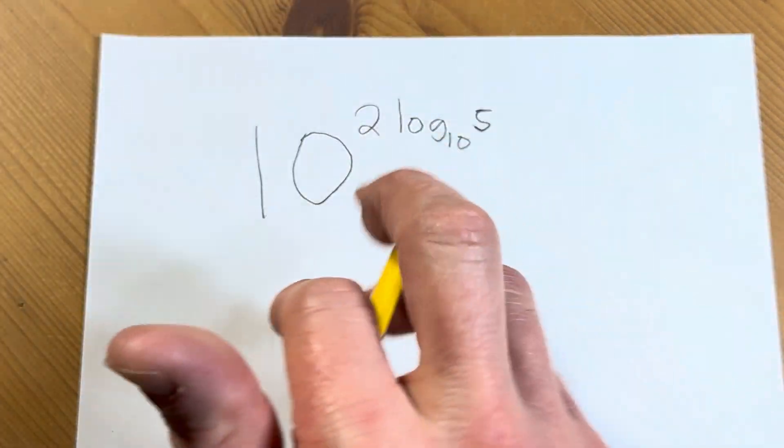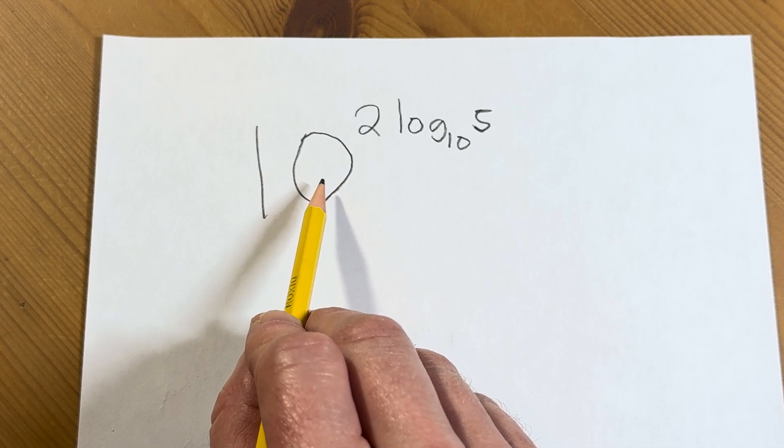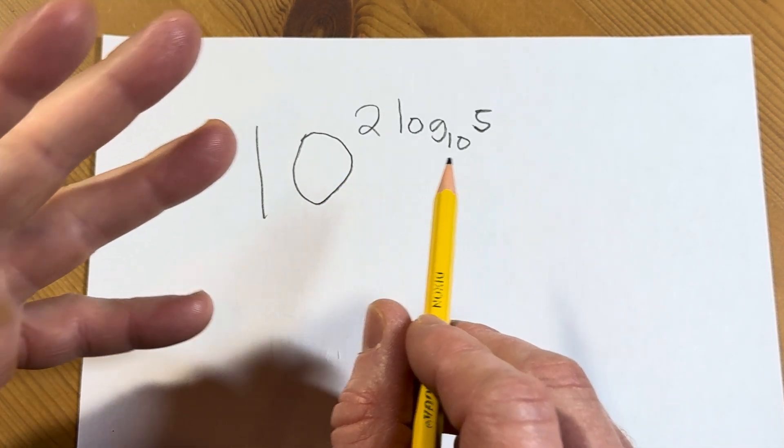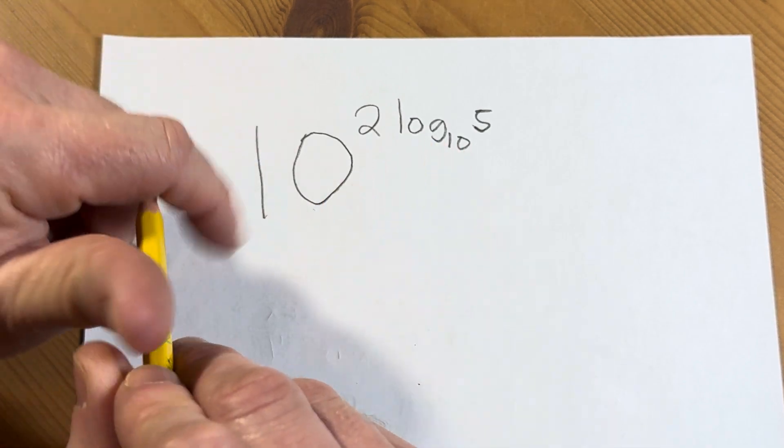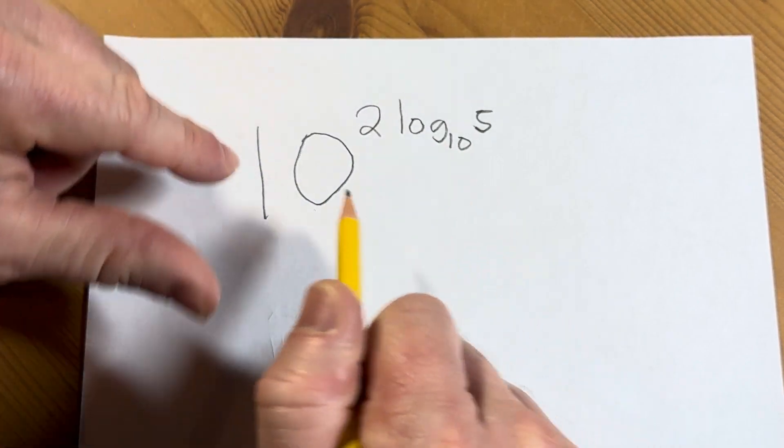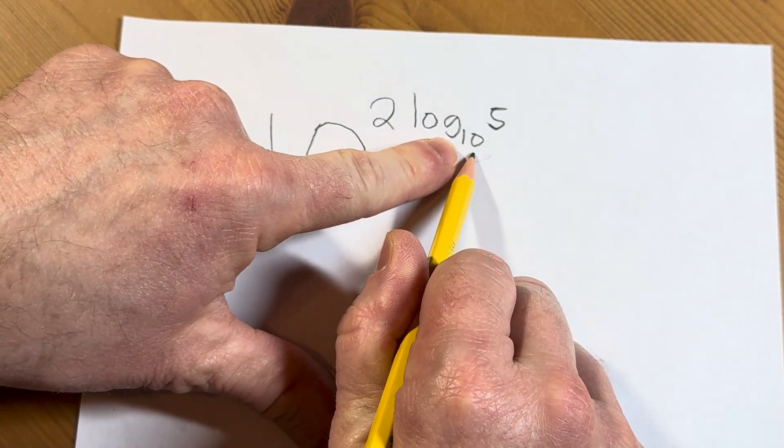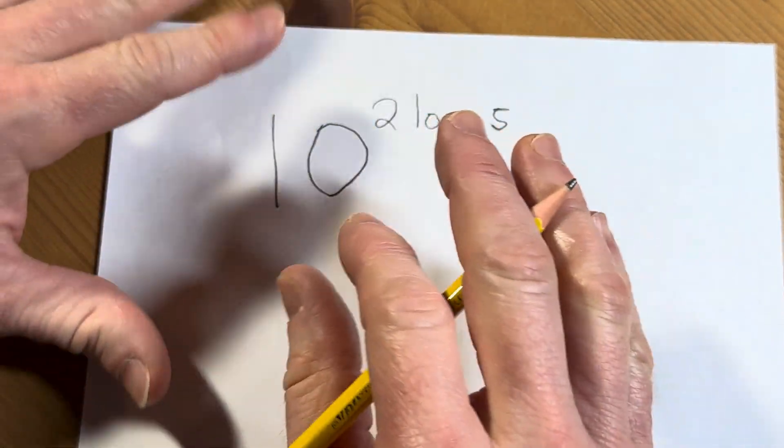When you think about it for a minute, you notice that there's some things in common right away. One thing you notice is that there's a 10 here, and there's a 10 here. Another thing you might notice is that this 10 is much bigger than this 10. That has nothing to do with the problem.